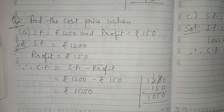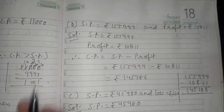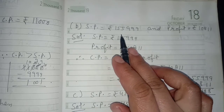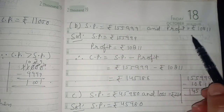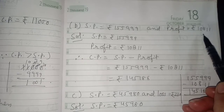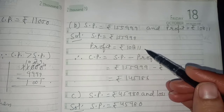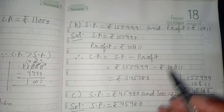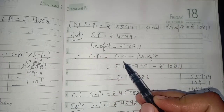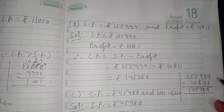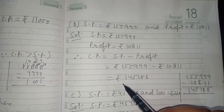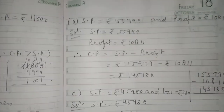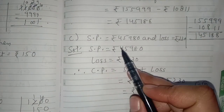Part b: SP is rupees 1,55,999 and profit is rupees 10,811. Write both values — SP and profit — and since we need to find CP with a profit, the formula is CP equals SP minus profit. Putting the values and subtracting, the answer is rupees 1,45,188.